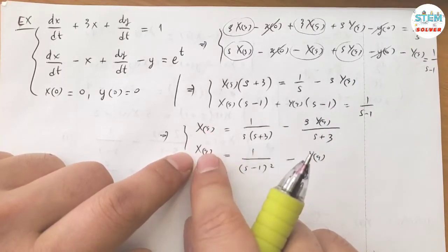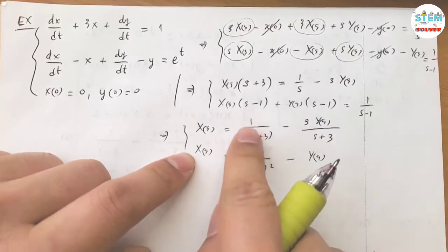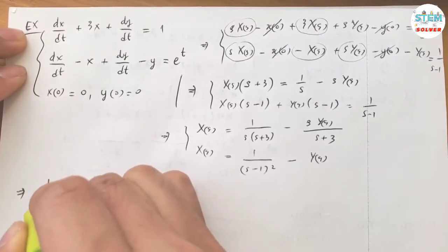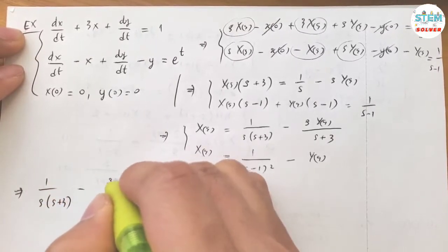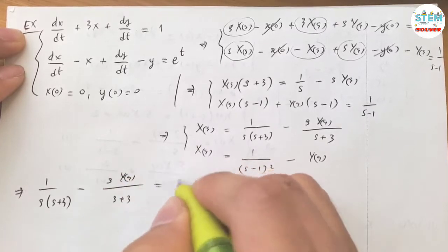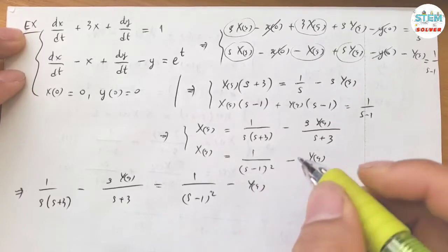Now I see capital X(S) equals this and it's also equal this. So let these equal to each other. I have 1 over S times S plus 3 minus S capital Y(S) over S plus 3 equals 1 over S minus 1 squared minus capital Y(S).